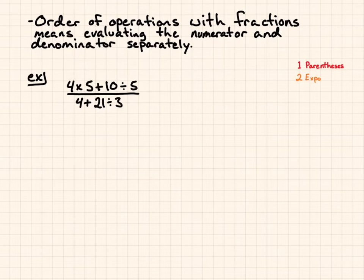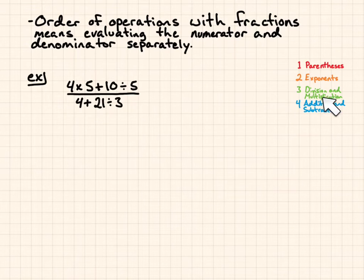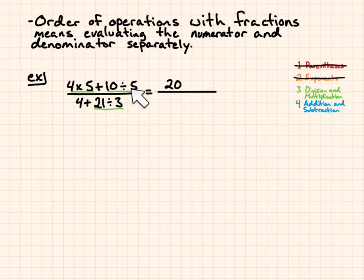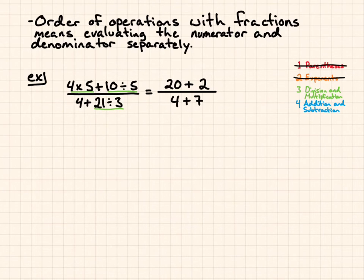Our order of operations: parentheses, exponents, division, multiplication, addition and subtraction. There are no parentheses and no exponents here, so we're looking at division and multiplication first. In the numerator I have 4 times 5 and 10 divided by 5. In the denominator I have 21 divided by 3. Taking care of those: 4 times 5 is 20, and 10 divided by 5 is 2, giving me 20 plus 2 in the numerator. And 21 divided by 3 is 7, giving me 4 plus 7 in the denominator.